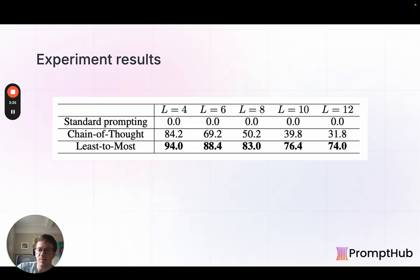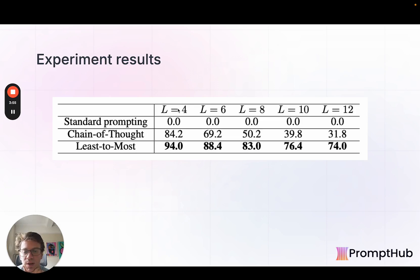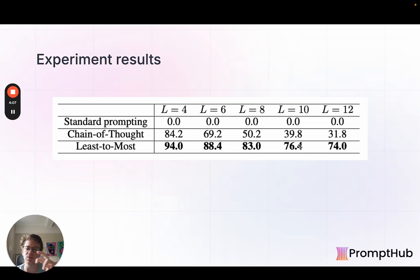Looking at some experiment results: one was a last-letter concatenation test. LLMs were sent a list of words and had to pull out the last letter of each and concatenate them. Least-to-most and chain-of-thought are pretty similar when the number of words is smaller, but you can see the delta between the two really grows as the number of letters to concatenate gets larger. This comes back to the fact that chain-of-thought tries to do all of this in one stream, versus least-to-most breaking it down into subproblems.